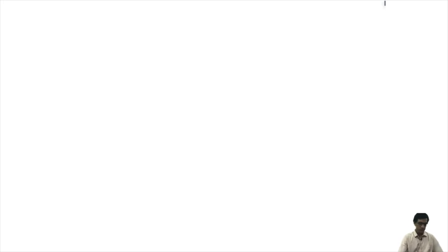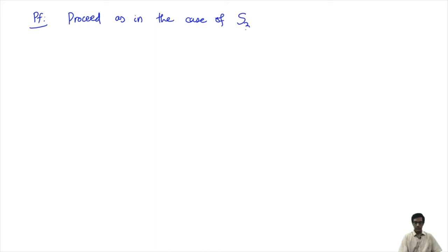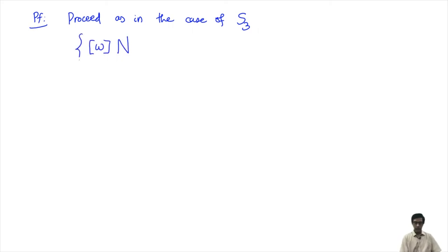The proof proceeds as in the S3 case: write out all possible cosets of elements and count them to show there can be at most n! of them. I suggest first doing it for S4, which will show you how to handle the general case.